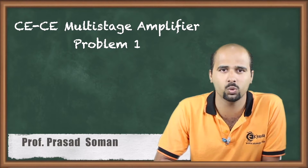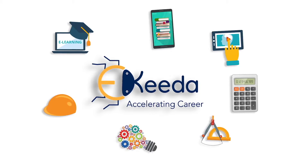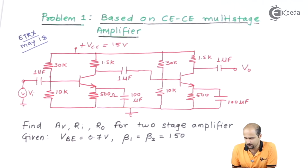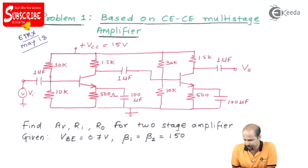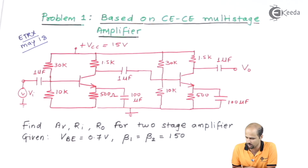Let's start with one particular model which has been asked in university examination. This particular question has been asked in ETRX, that is electronics branch, for May 2018 Mumbai University. The question comprises of two stages, both are BJTs. They ask us to calculate the value of AV (voltage gain), RI (input impedance), and RO (output impedance). Fortunately, they have not asked for the current gain.